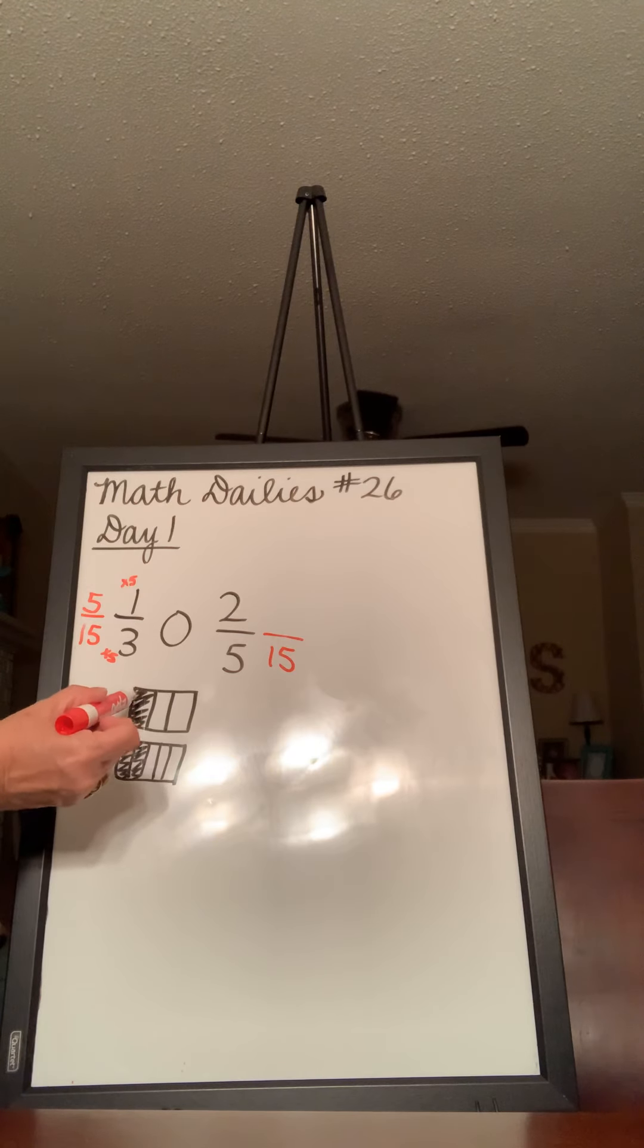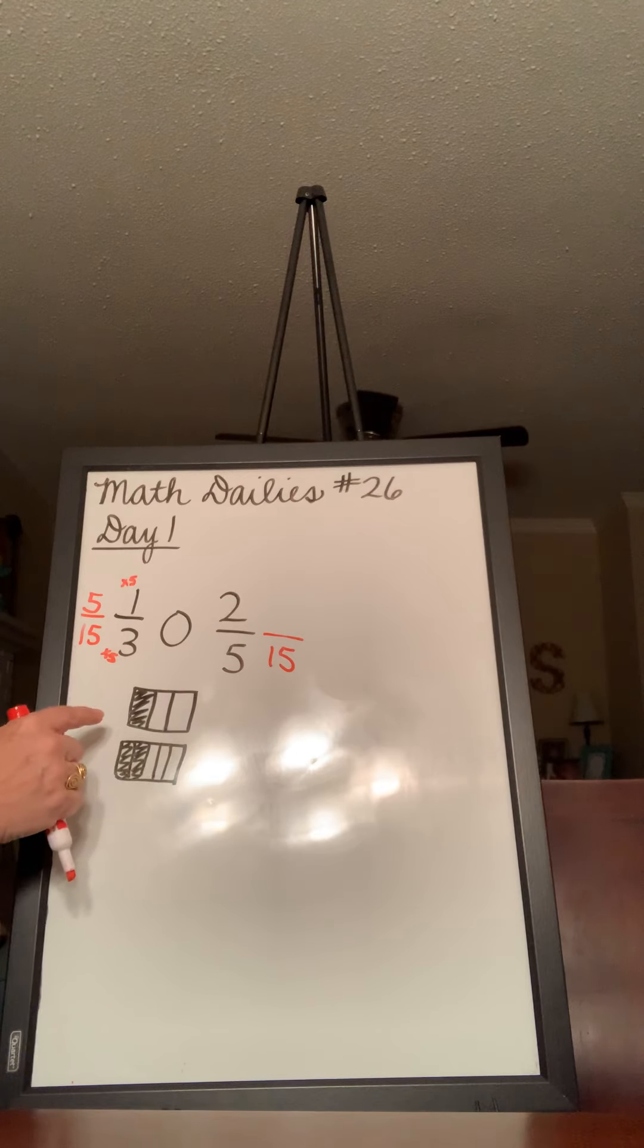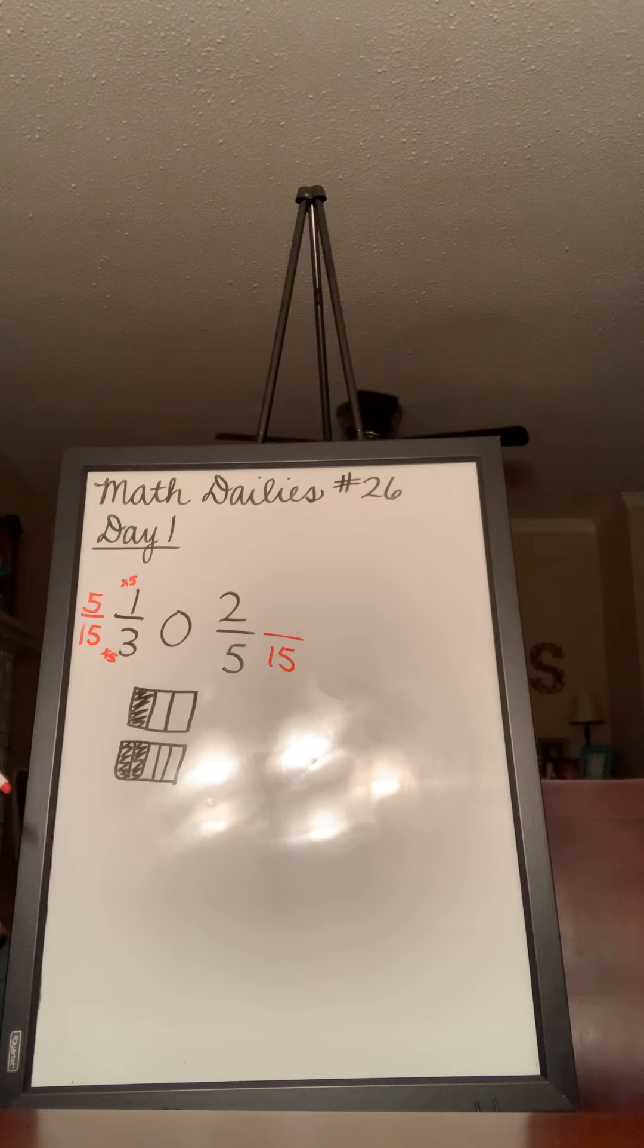If we divided each of these into 5 and had 5, 10, 15, this would be 5/15, then 10/15, then 15/15. So, we can change it to 5/15.